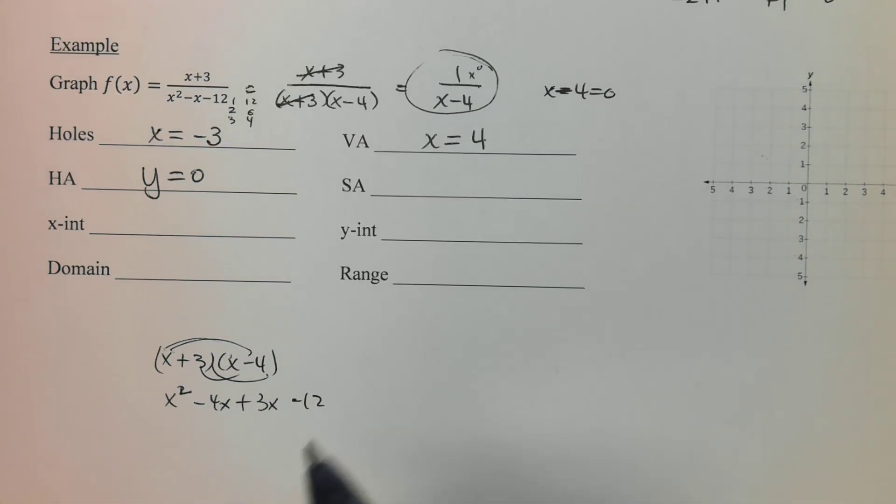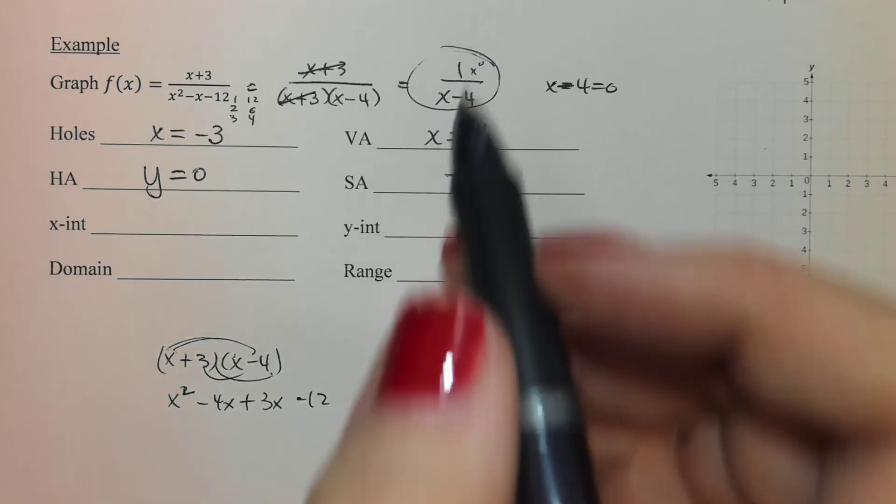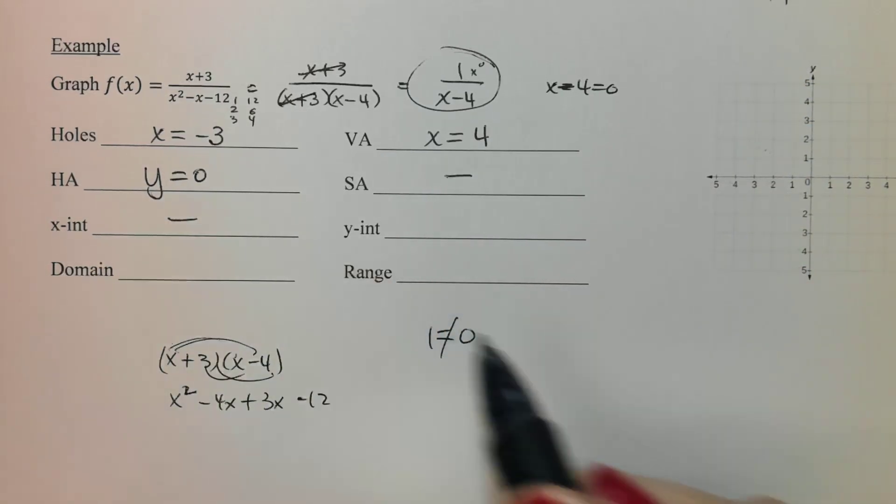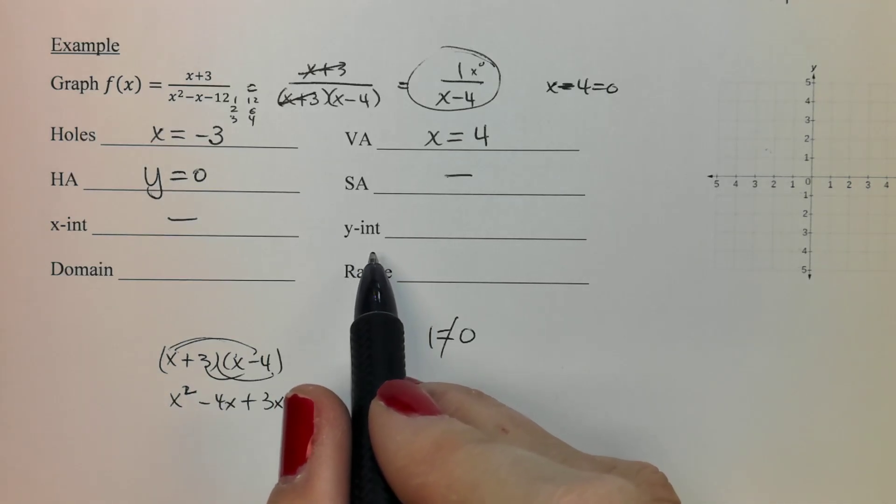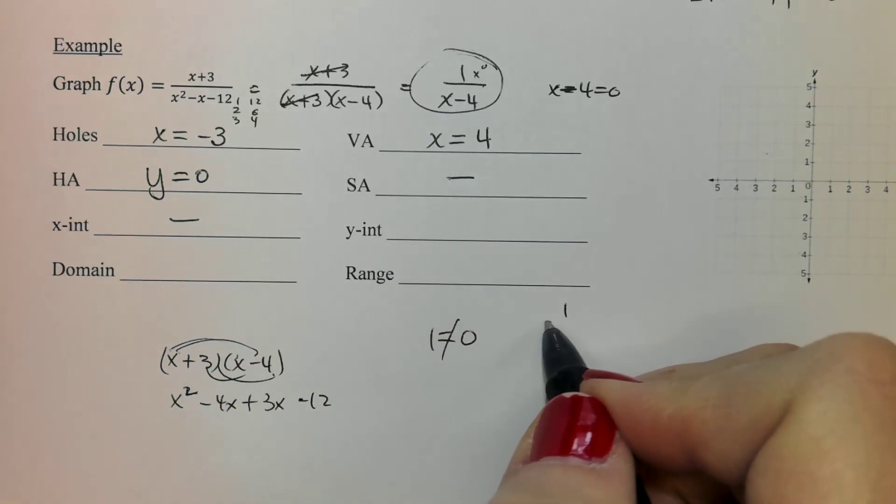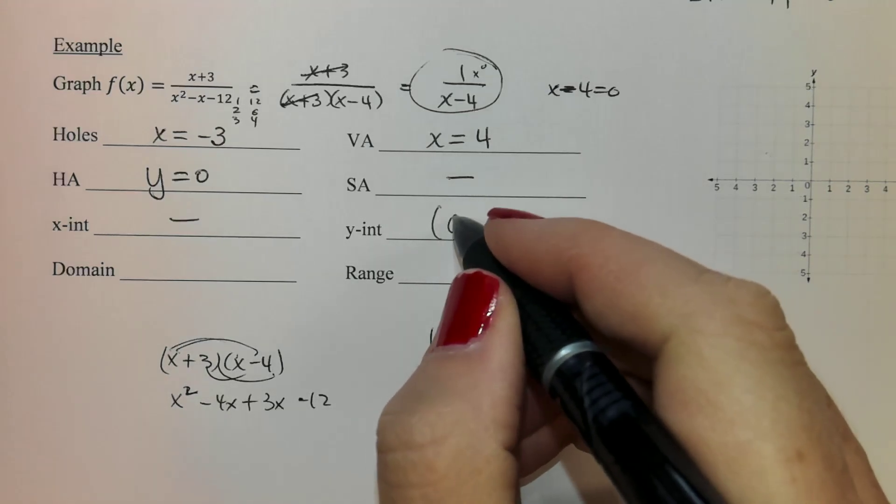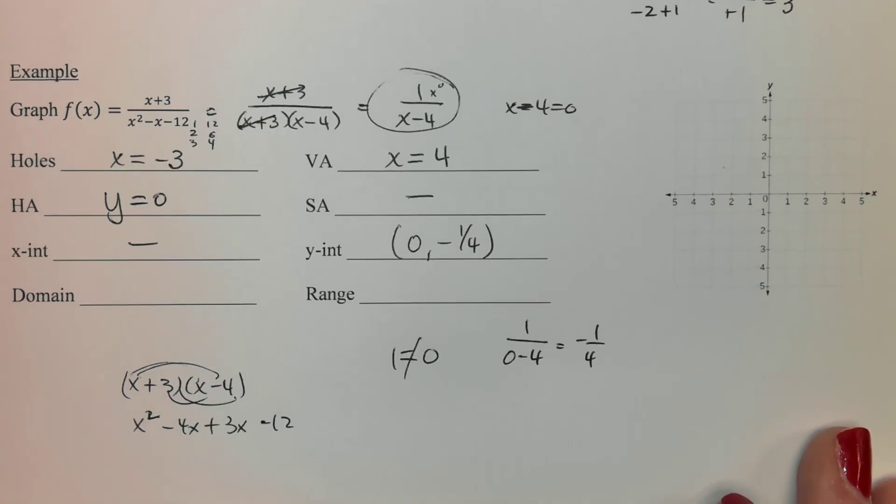If you decided you had a horizontal asymptote, then you cannot have a slant. So you can cancel that one out. Your x-intercepts are when your numerator equals zero. We can't set one equal to zero. That's not true. So there aren't any of those either. Y-intercept, plug a zero in for all the x's. I'm going to put a zero right there, which means it's going to be negative one-fourth. And then let's graph it, and then we'll do our domain and range.